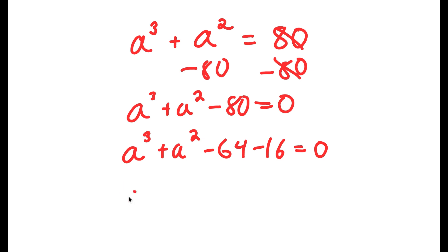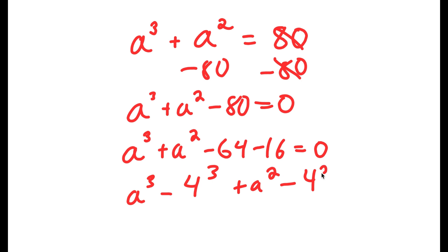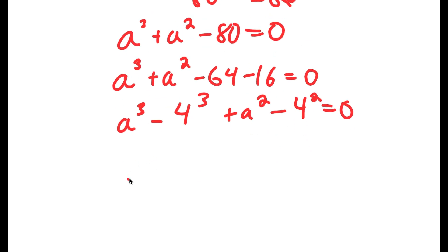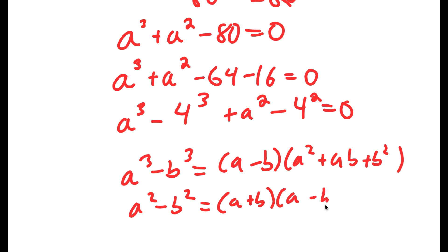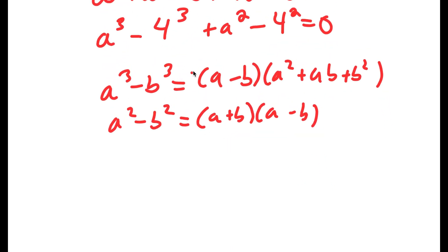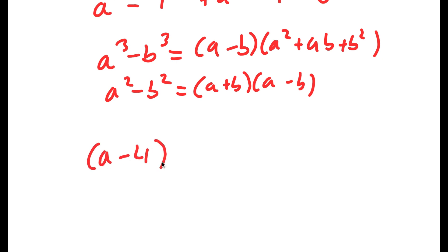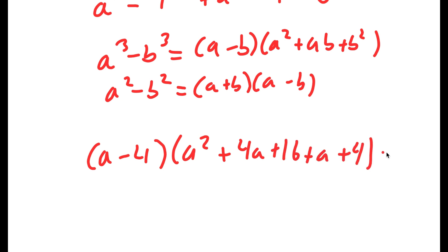I'm going to rewrite negative 64 as negative 4 to the power of 3, and negative 16 as negative 4 squared. Using the difference of cubes formula — a cubed minus b cubed equals a minus b times a squared plus ab plus b squared — and the difference of squares formula — a squared minus b squared equals a plus b times a minus b — I end up with a minus 4 times a squared plus 4a plus 16 plus a plus 4 equals 0.